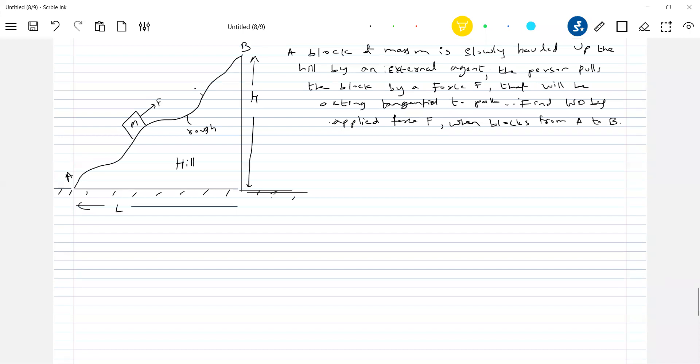Read the question. A block of mass M is slowly hauled up by an external agent. The person pulls the block by a force F. The external agent is the person only. That will be acting tangential to the path. Find the work done by applied force F when the block moves from A to B.